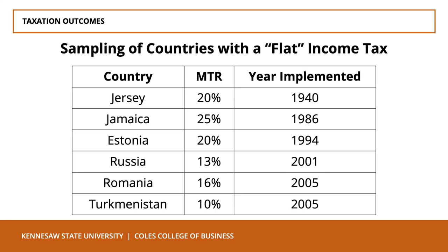Some countries impose flat income taxes, not to be confused with a head tax. A head tax is a constant amount paid in taxes at all levels of income, while a flat tax is a constant or proportional rate at all income levels. Unlike a flat tax, a head tax is an example of a regressive tax, since the average tax rate declines as income increases. Countries with flat taxes include Jersey, Jamaica, Estonia, Russia, Romania, Turkmenistan, and others.